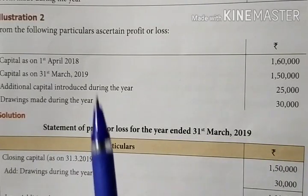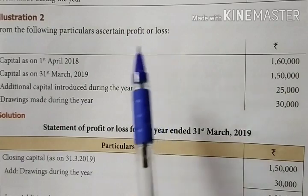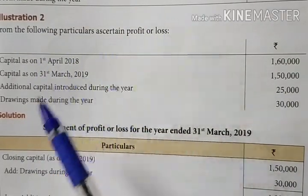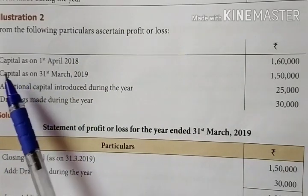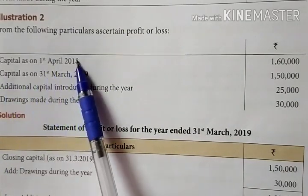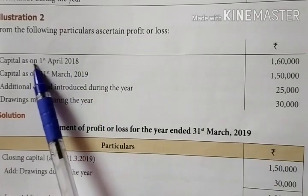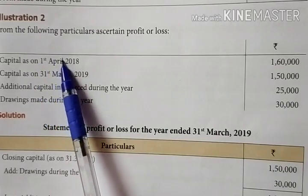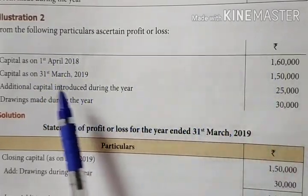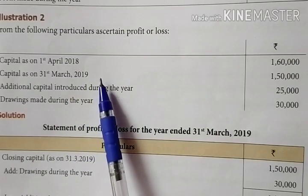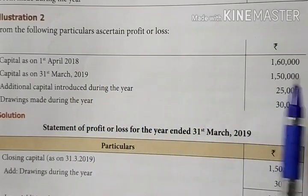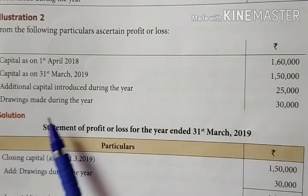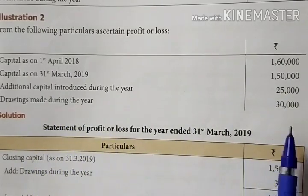Hello students. Single entry sum — next method: from the following particulars, calculate profit or loss. Capital as on 1st April 2018, meaning opening capital, is 1,60,000. Capital on 31st March 2019 is 1,50,000. Additional capital introduced: 25,000. Drawings made during the year: 30,000.